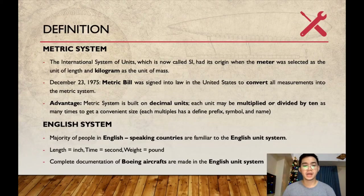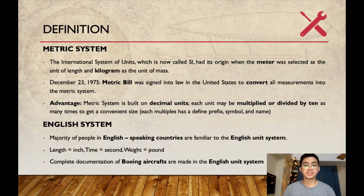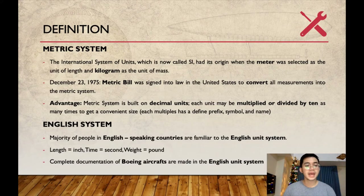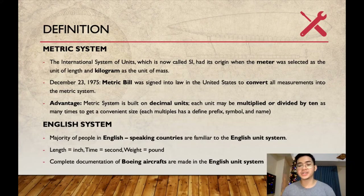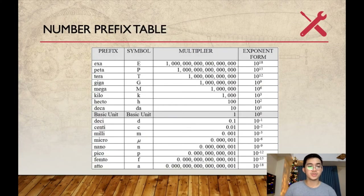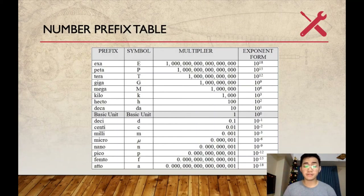English system: the majority of people in English-speaking countries are familiar with the English unit system. For example, length equals inch, time equals second, weight equals pound. Complete documentation of Boeing aircraft is made in the English unit system. Since the Boeing industry originated from an English-speaking nation, workers from the aviation industry were accustomed to using the English system. Some measurements, when calculated, can result in very large or very small numbers which are hard to read, and to solve this problem, they can be represented by the number prefix table.